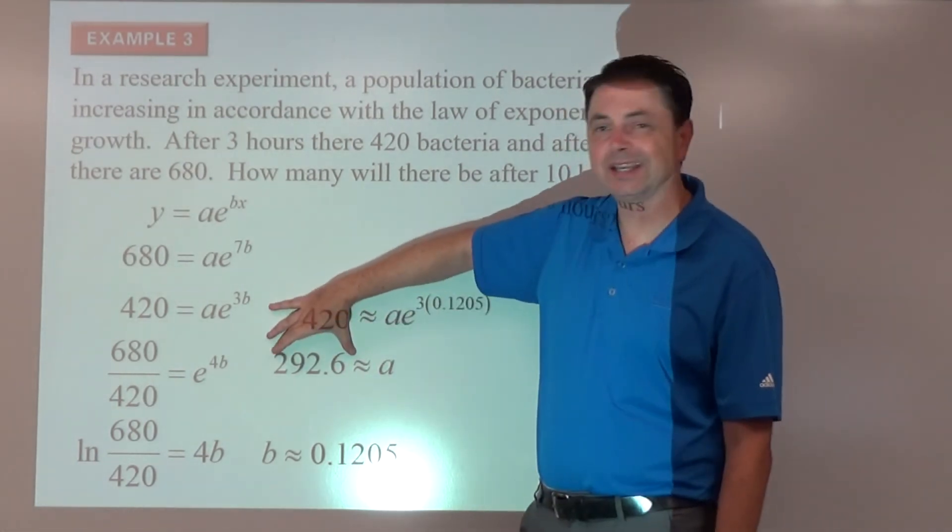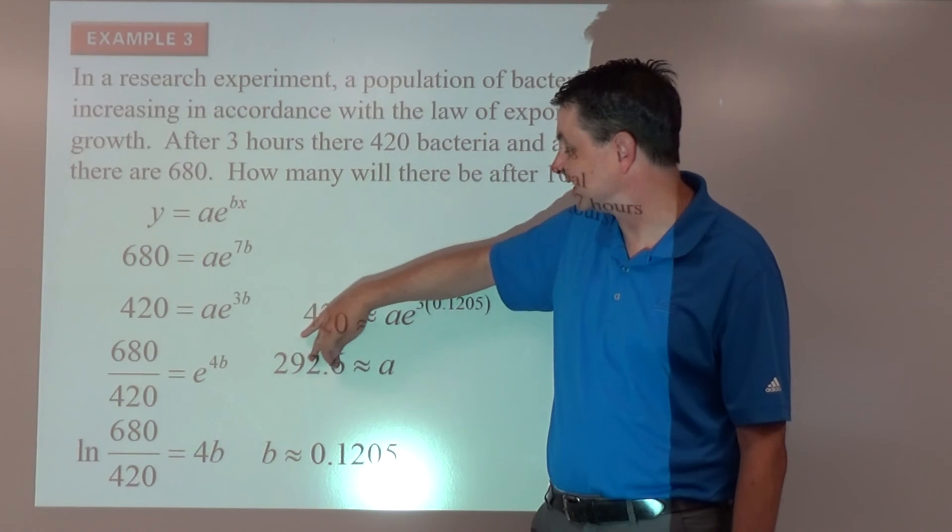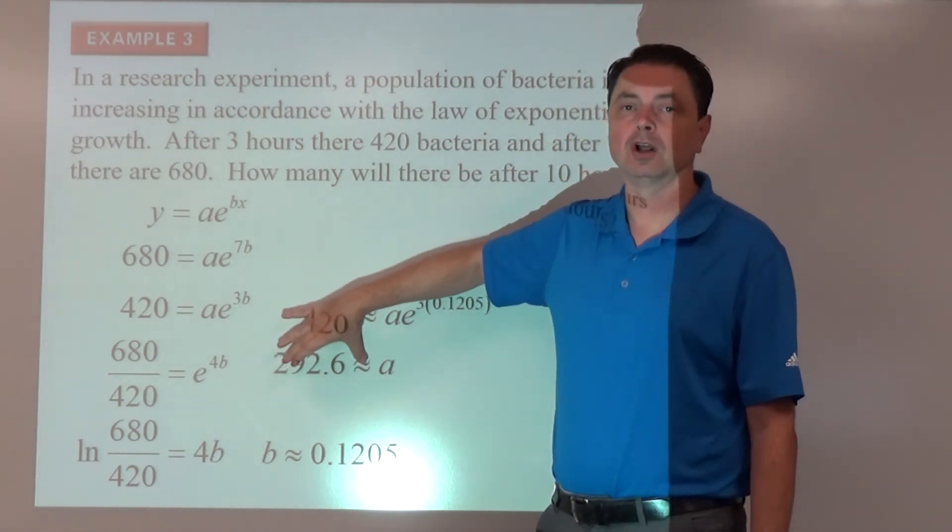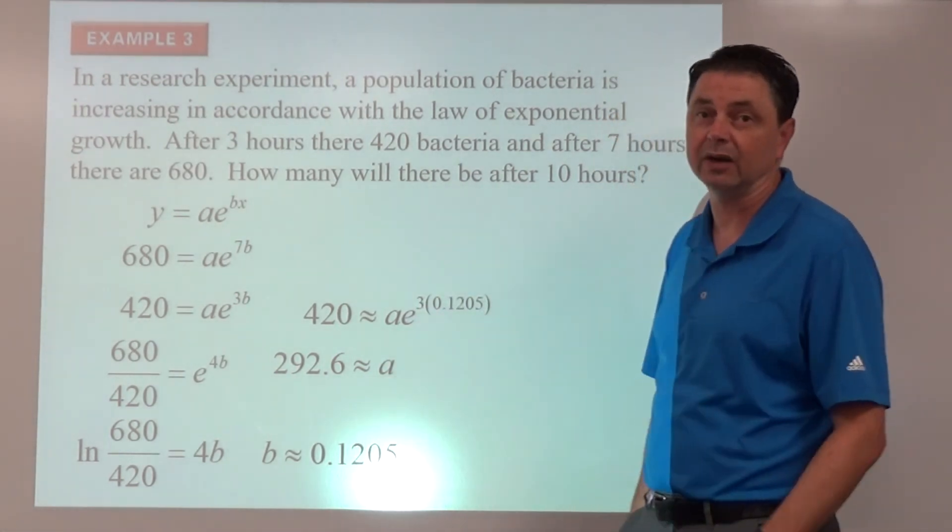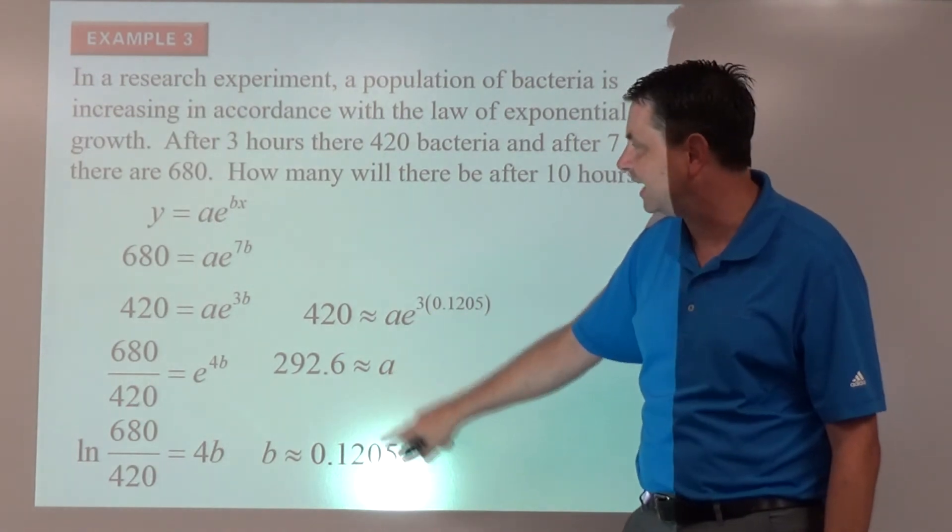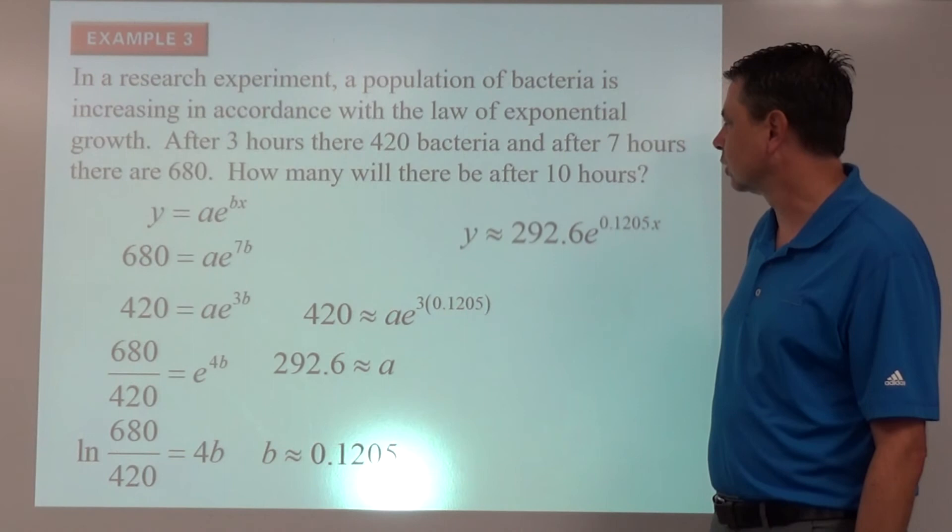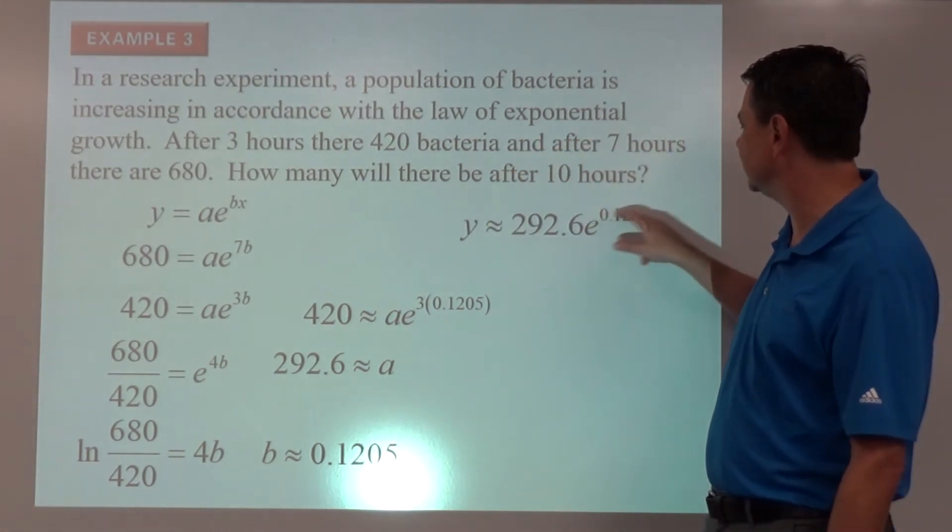Now that's not actually a legitimate starting value for bacteria because we can't really have 0.6 bacteria, but this is appropriate for the model only, not analyzing how many or counting how many bacteria. That would not be valid. But it is good for our model where we now have a and b and can go back to our start. So our function is now y equals 292.6 times e to the power.